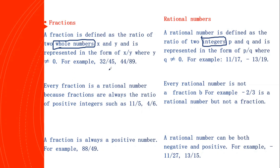For example, in the fraction 32 by 45, here 32 and 45 are both whole numbers. Similarly, 44 by 89 — both are whole numbers. But if you look at examples of rational numbers, the first example 11 by 17 — both are whole numbers of course. But in the second example, minus 13 by 19, minus 13 is not a whole number; minus 13 is an integer. So the main difference is: both numerator and denominator in a fraction are whole numbers, but in rational numbers, both are integers.